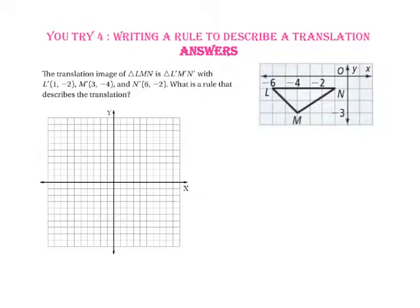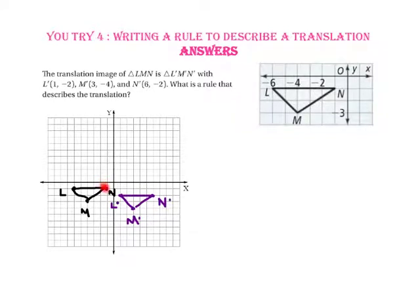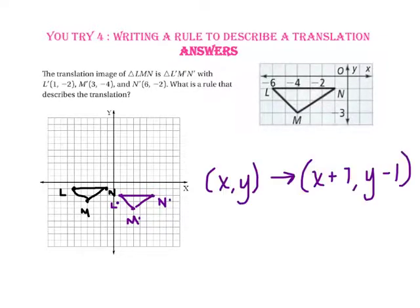Another way to answer this question would be to graph both triangles and count the translation. Once the two triangles are graphed, we can count from one point to its image. Taking point N, we move 7 units to the right and 1 unit down. So our translation rule is: (X, Y) maps onto (X plus 7, Y minus 1).